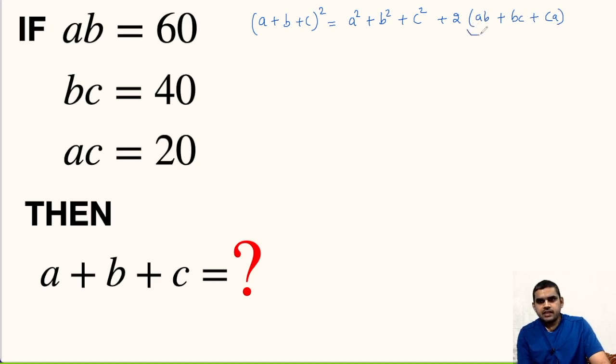We have the value of AB plus BC plus CA, so this last term can be easily computed. This is 2 times AB is 60, BC is 40, and AC or CA is 20.